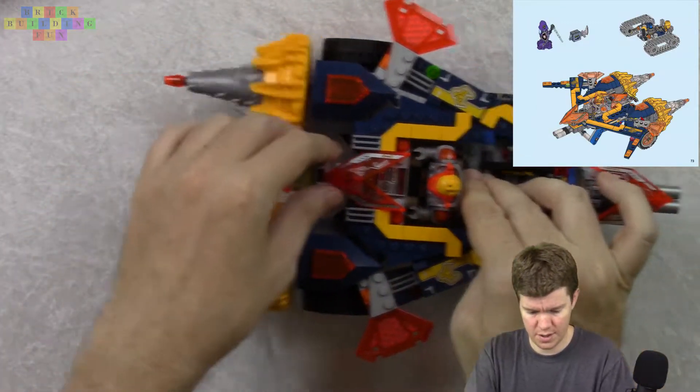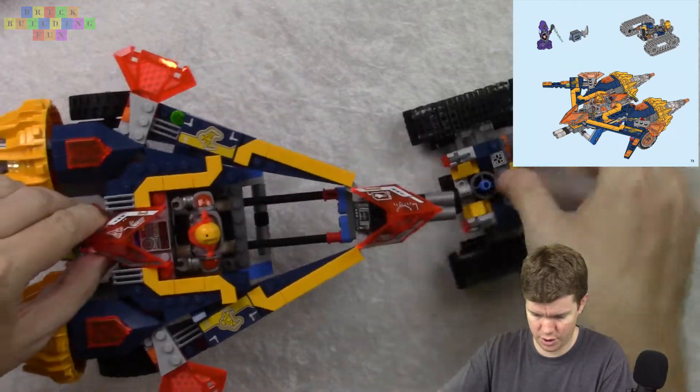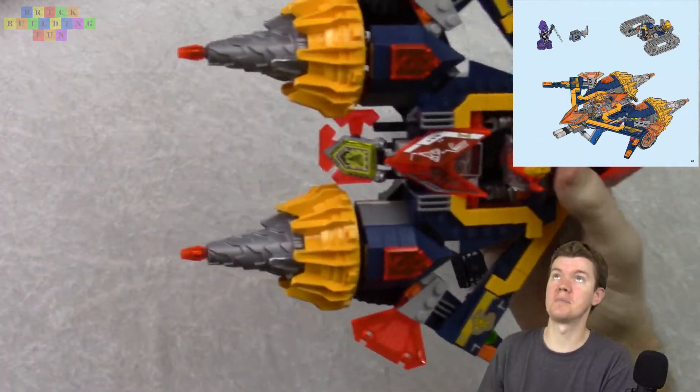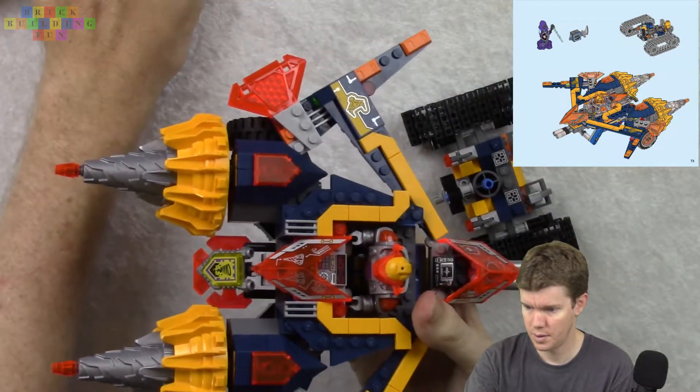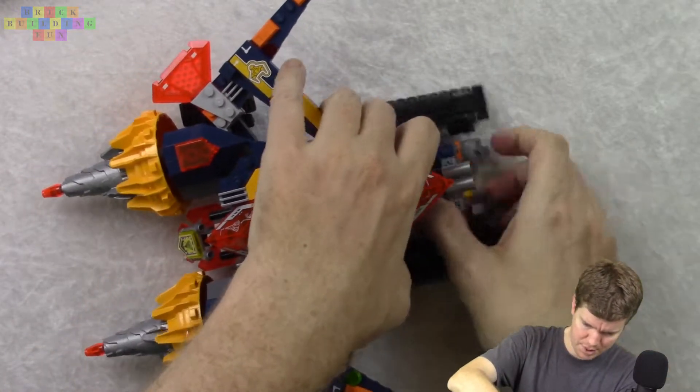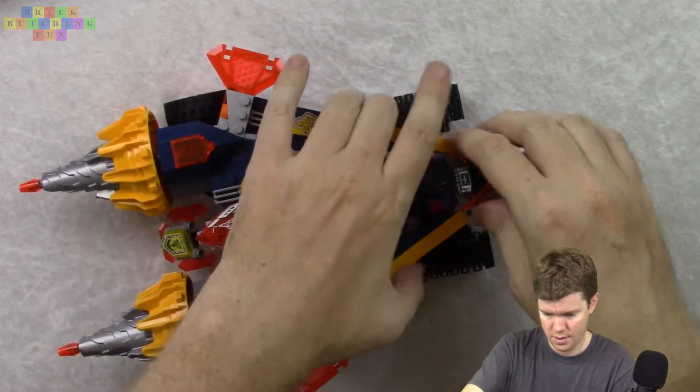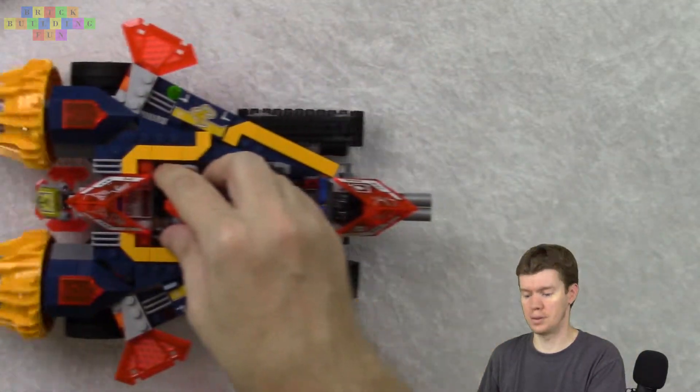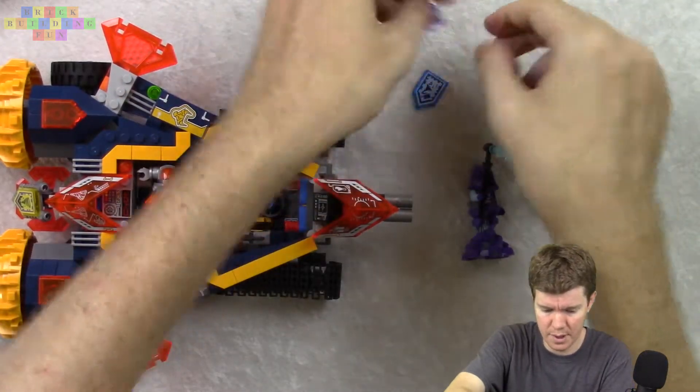Okay. And so I guess when this detaches, this goes like that and it becomes an airplane. Oh. That's pretty cool. And that's it. That's all there is to that. I'll put this back together. Here. There. That is very cool. We got our dudes here. We got our Nexo powers and our forbidden power. We're all done.